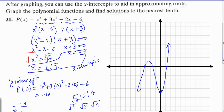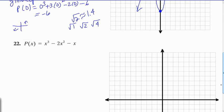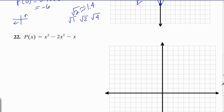Now, let's do number 22. This function is also a cubic. These three terms have a GCF of x. Let's factor that out. We end up with x squared minus 2x minus 1. And this is not factorable, because there aren't two numbers that multiply to negative 1 and add up to negative 2.